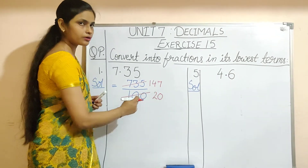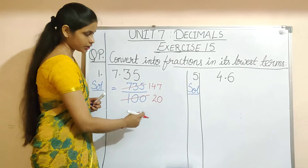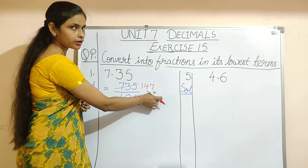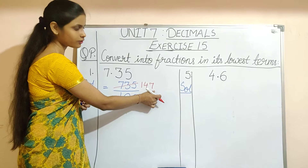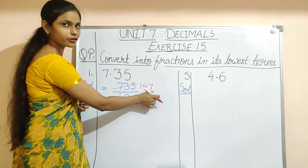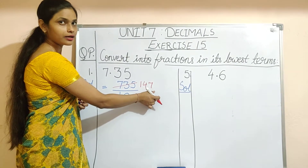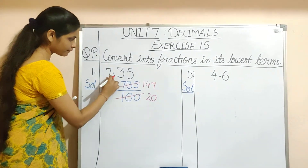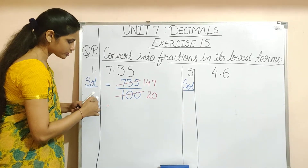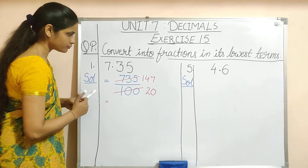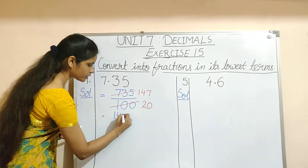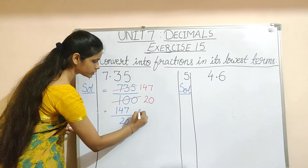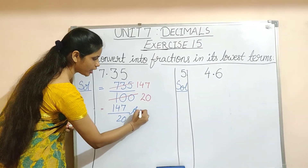Now they don't have a common factor. It is not exactly divisible by 5 or 10 because the unit digit is not 5 or 0. So 7.35 in its lowest term will be 147 upon 20. This is the answer.